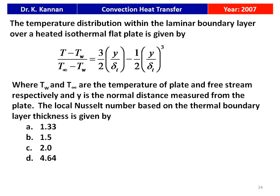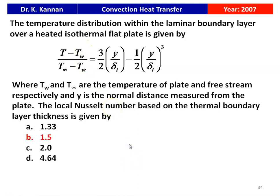The next question from the 2007 question paper: the temperature distribution within the laminar boundary layer over a heated isothermal flat plate is given by (T − T_w) / (T∞ − T_w) = (3/2)(y/δ_t) − (1/2)(y/δ_t)³, where T_w and T∞ are the temperatures of the plate and free stream respectively, and y is the normal distance from the plate. The local Nusselt number based on the thermal boundary layer thickness is: options 1.33, 1.5, 2, or 4.64. The answer is 1.5.